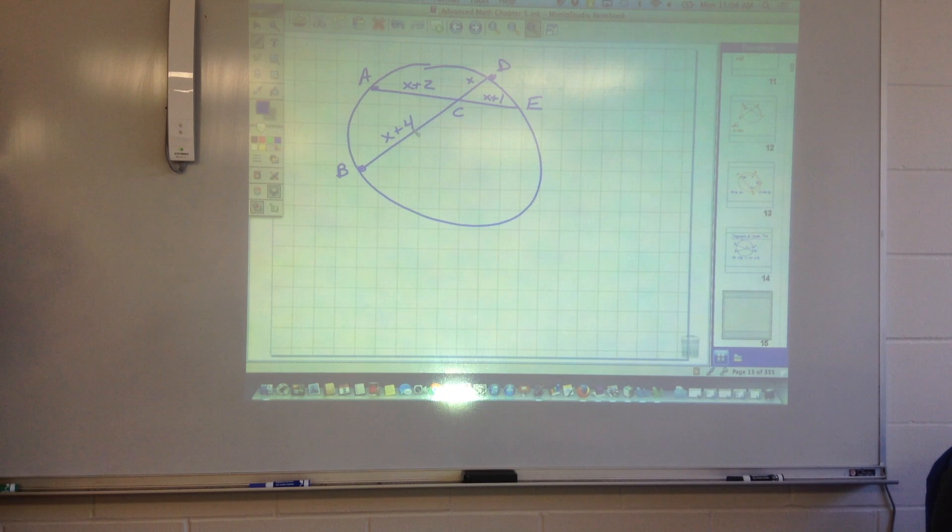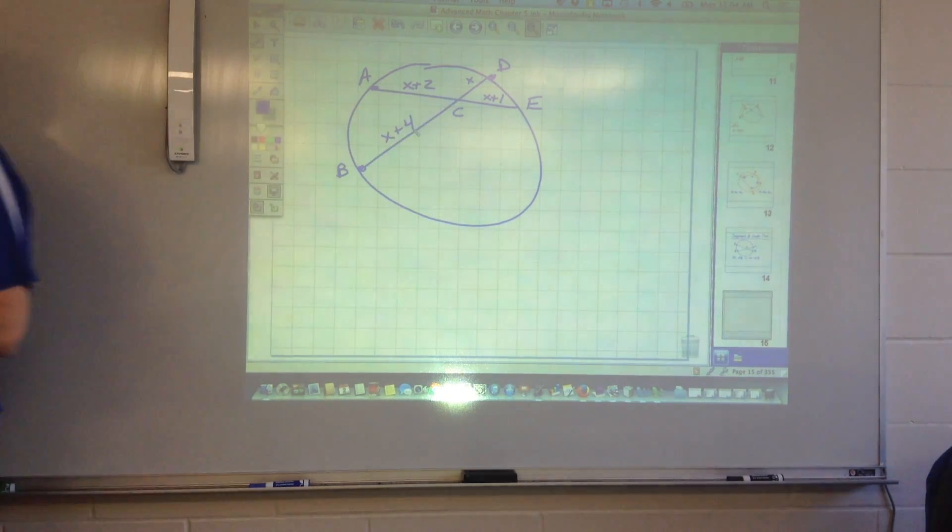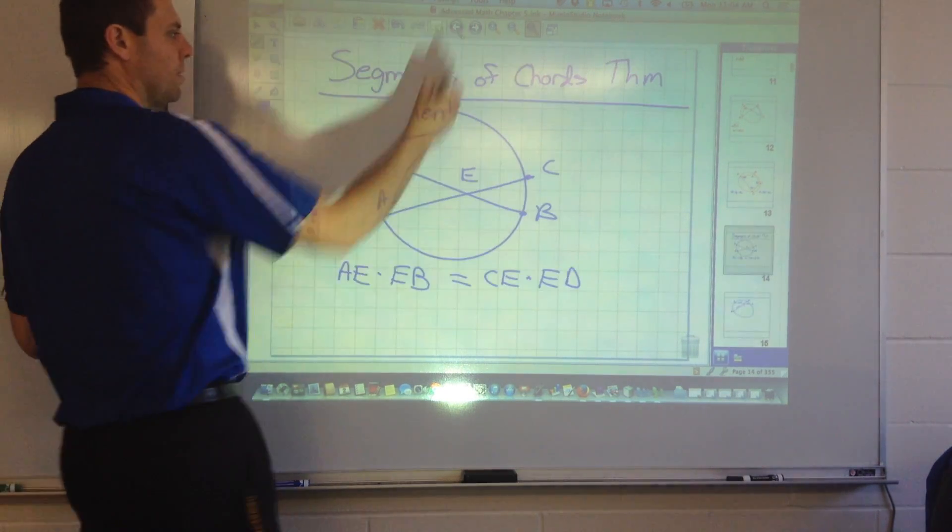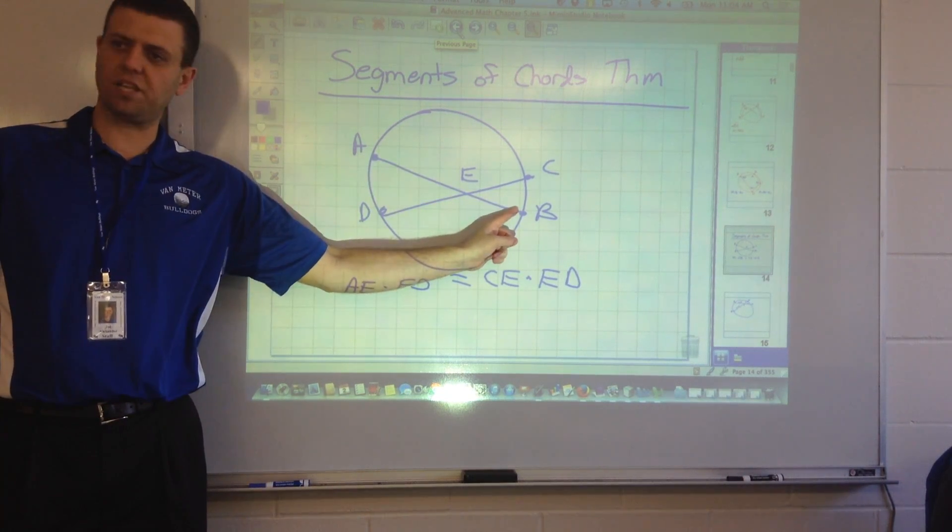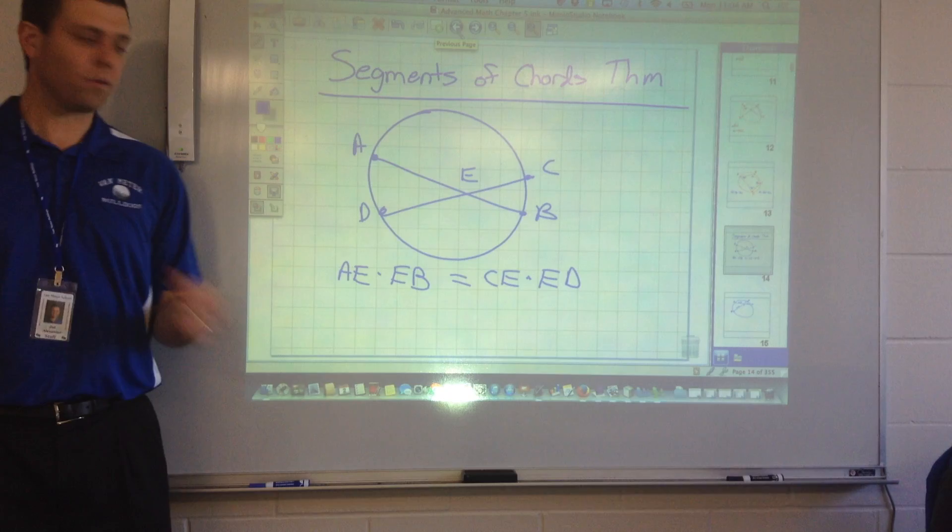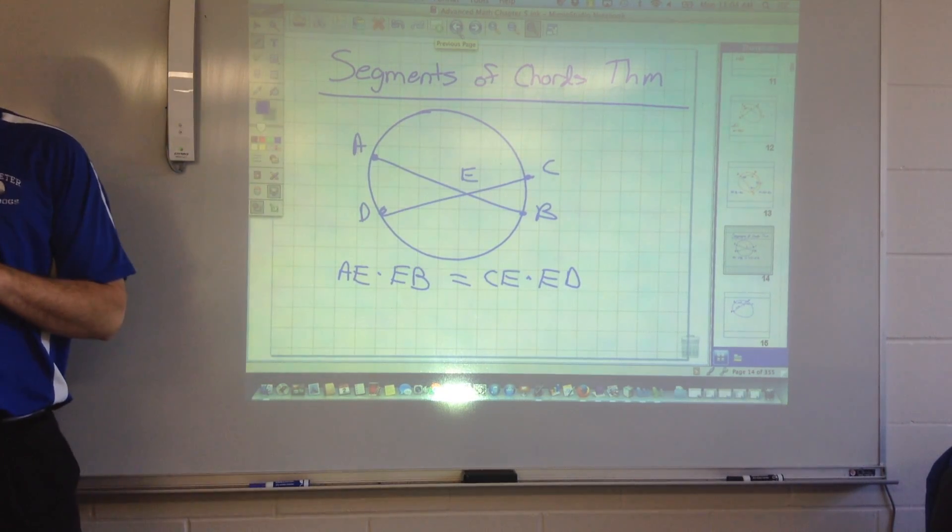Can I use the segments of chords theorem that I just showed you in the previous slide? Yeah. Yeah, because we have two chords that intersect each other inside the circle. Right? Their point of intersection is definitely inside the circle. Okay? So, if you use that segment of chords theorem, you know that you can multiply that length times the other length, and that will equal this length times that one. Okay?